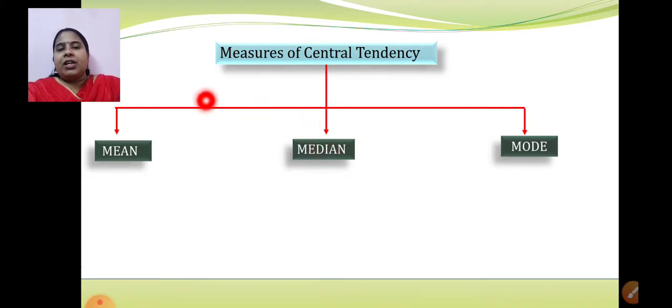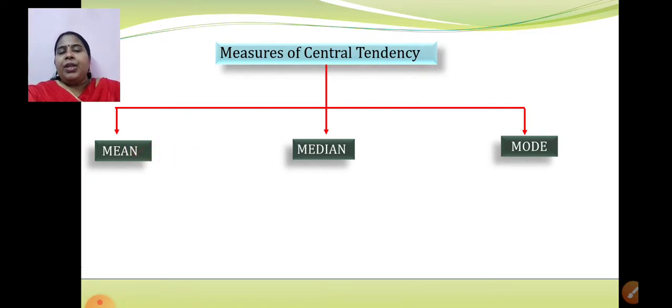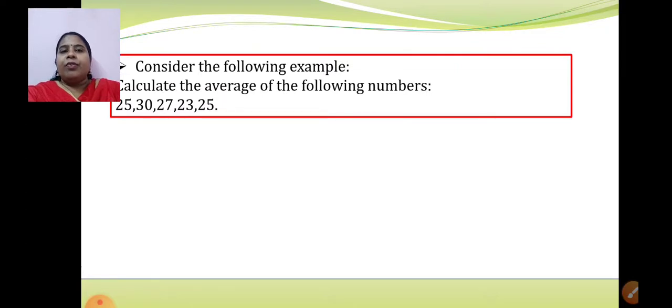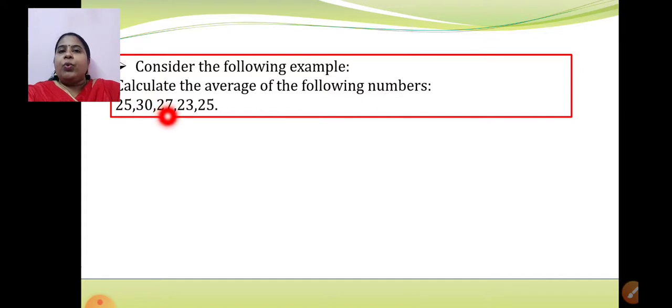In today's session, we will be starting with the first central tendency, that is mean, in detail. Remaining median and mode will continue in the next session. I am giving you an example before we start with the concept. Calculate the average of the following numbers: 25, 30, 27, 23, and 25.